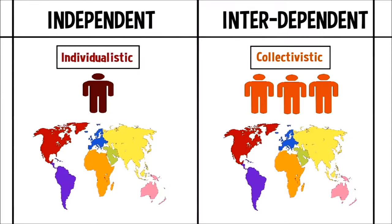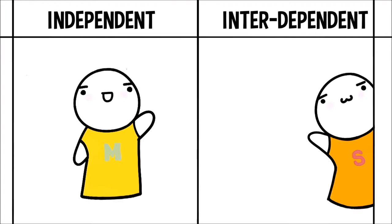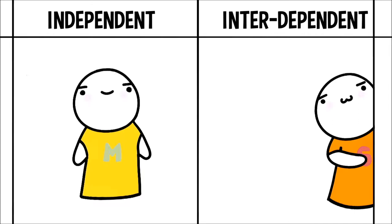In short, they're patterns of thought associated with I versus we. This is Max, who has an independent self-construal. This is Sarah, who has an interdependent self-construal. They're going to help us demonstrate the difference between the two types of self-construal.